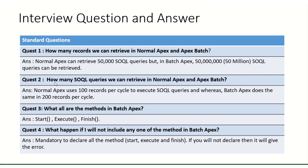How many SOQL queries can we run per transaction? In normal Apex, we have 100 SOQL queries per transaction cycle. But in Batch Apex, we have double that — 200 SOQL queries per cycle. The required methods in batch are start, execute, and finish.